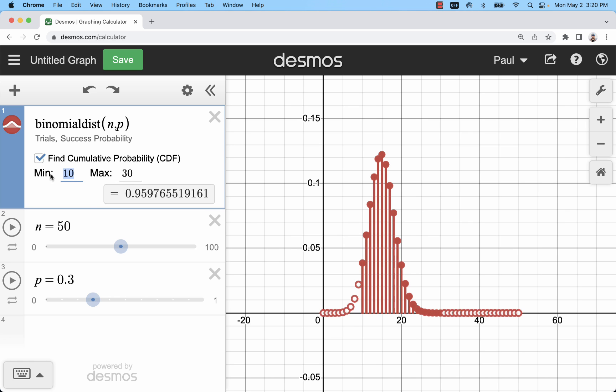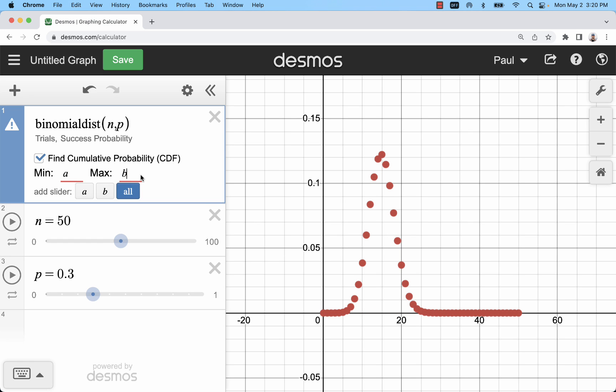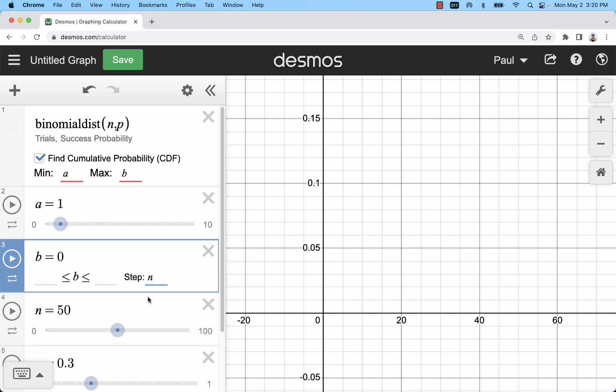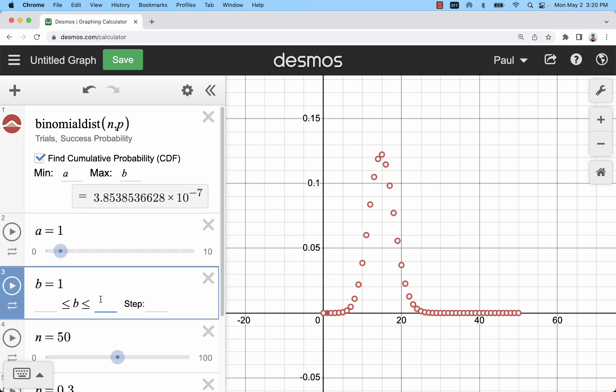You could even take this a step further and put values of a and b as sliders for the min and max. Here we need to make sure that a doesn't go below 0, and it has a step of 1. And b can't go above n, so that would be my max value, and also a step of 1.